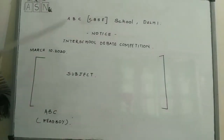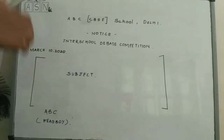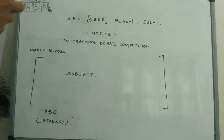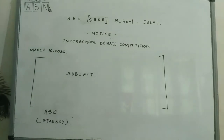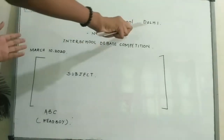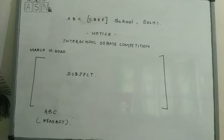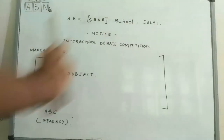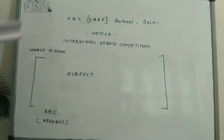Here is the format of notice writing. This is how notices are written — let me explain you the format. So firstly you have to write the school name. In the question the school name will be given by default. If it's not given, write a school name on your own but a dummy one — don't name any school that actually exists. So write something like 'ABC School, Delhi' — it's safer that way.